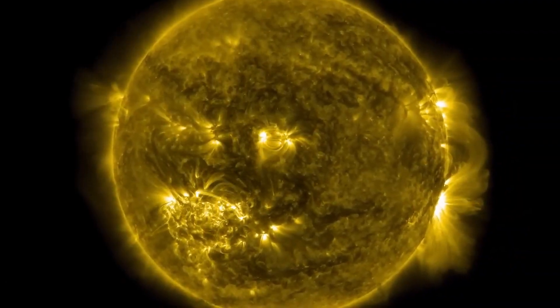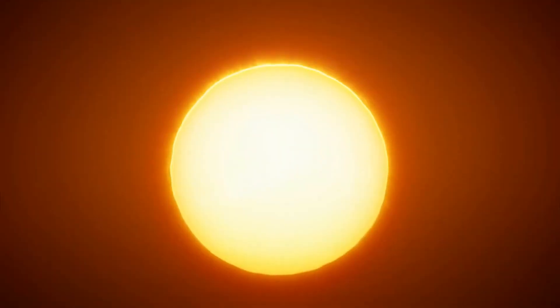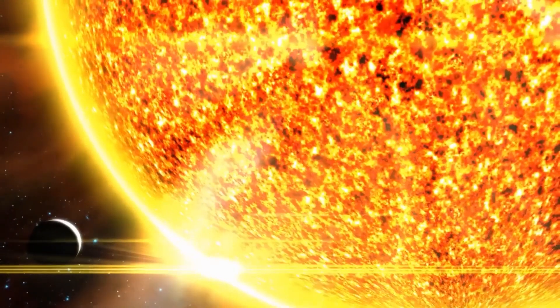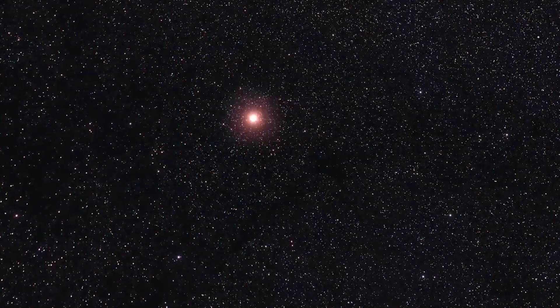Betelgeuse can get very dim at times. In February 2021, when it was around 1.614, its size was one of the smallest in recent memory. You can still see it in the sky at night, but it's not as bright as normal.